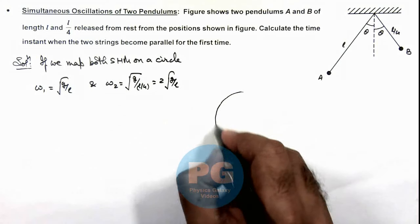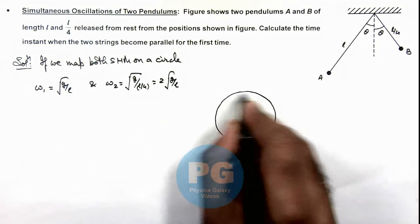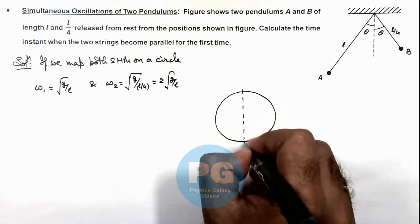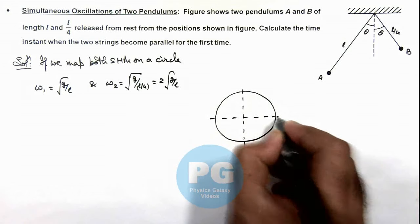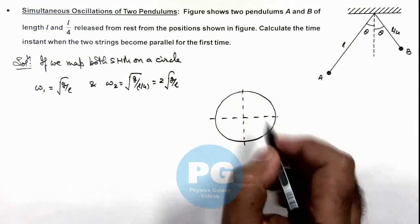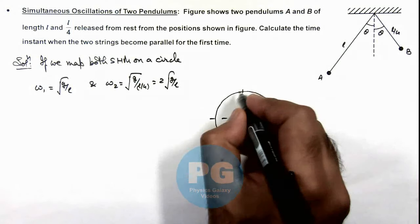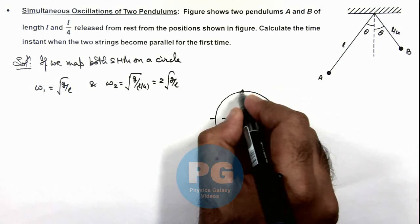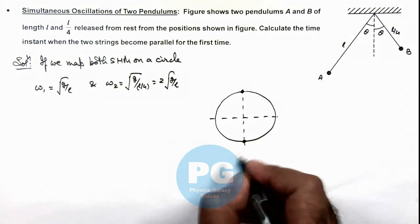Here if we map the two SHMs on a circle, we can see both of these SHMs are having same angular amplitude theta. So we can map them on same circle, and A is starting from its one extreme and B is starting from its other extreme.